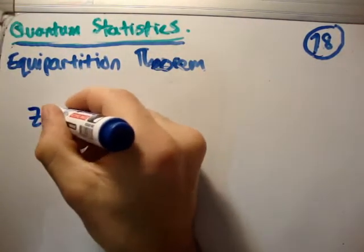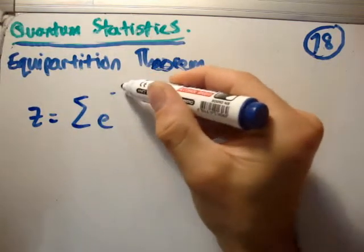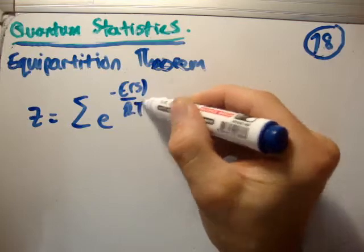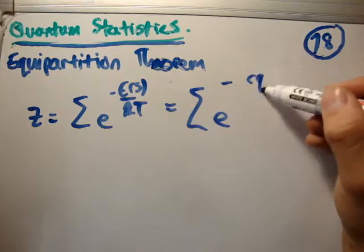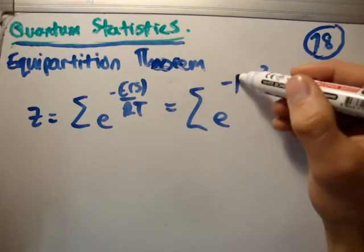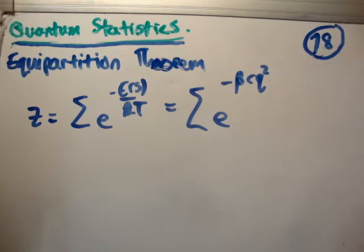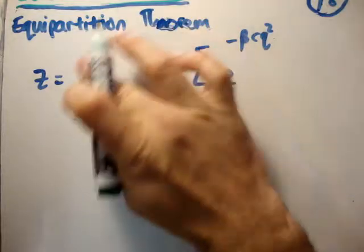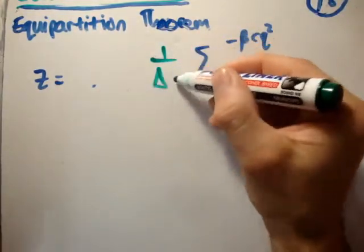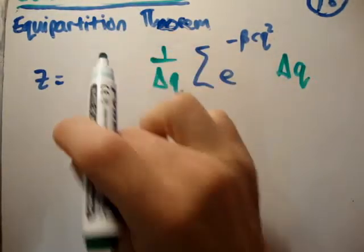So we know that the partition function z is equal to the sum of the Boltzmann factors. But we also know that in this case we store the energy quadratically, so it's e to the minus cq squared over kt, but we're going to use the thermodynamic beta, which is 1 over kt. So, that's what z is. And now what we're going to do is we're going to do a small bit of cheating. In order to evaluate this particular sum, we're going to multiply by delta q inside the sum and divide by delta q outside the sum. So I'm actually going to do it straight away here. So, we're going to have 1 over delta q, and we're going to have delta q here.